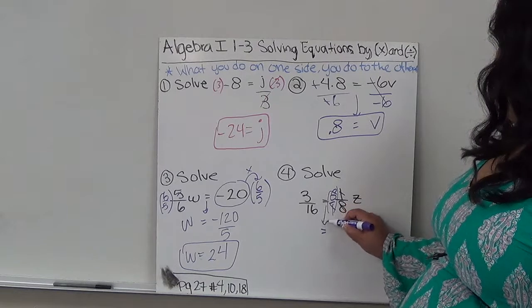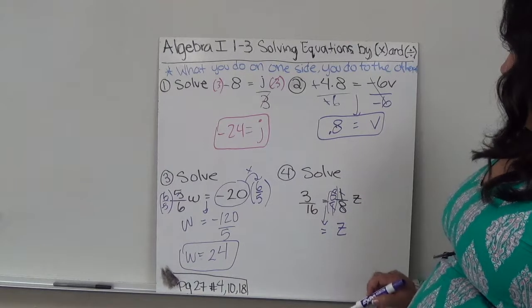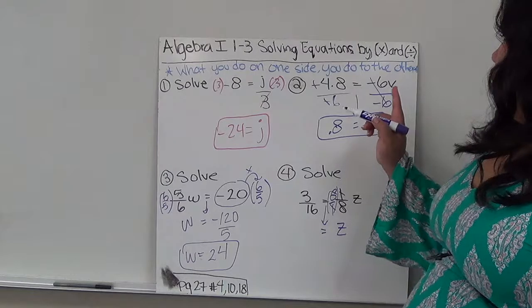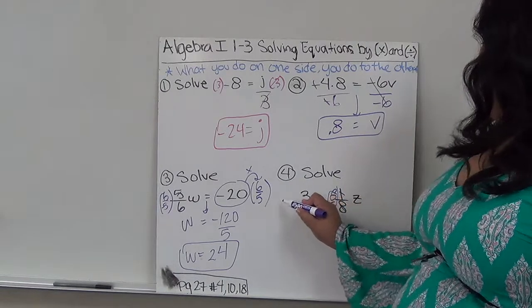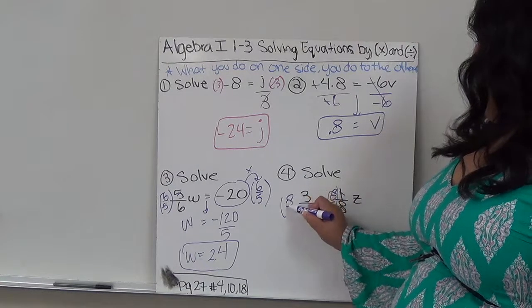Leaving me with the equal sign and z. And what I do to one side, I have to do to the other, so then I have to multiply this by 8 over 1.